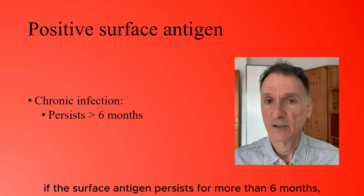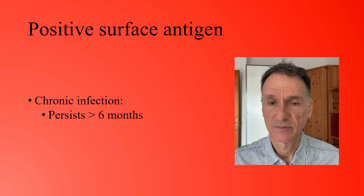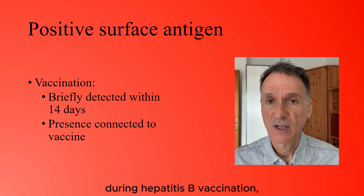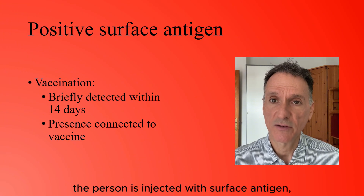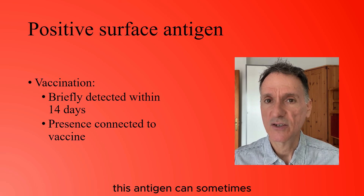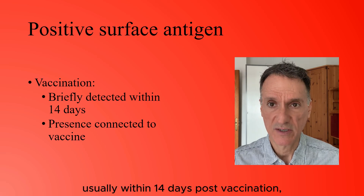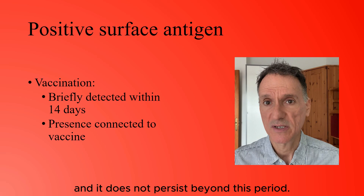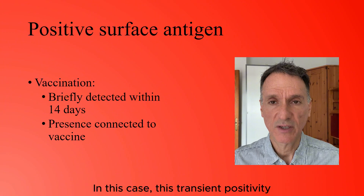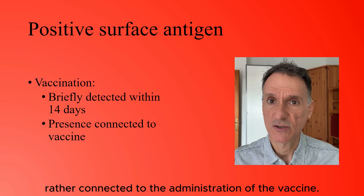However, if the surface antigen persists for more than six months, it indicates chronic hepatitis B. It is worth mentioning that during hepatitis B vaccination, the person is injected with surface antigen, and as a result, after receiving the vaccine, this antigen can sometimes be briefly detected in the blood, usually within 14 days post-vaccination, and it does not persist beyond this period. This transient positivity is not indicative of an actual infection but is connected to the administration of the vaccine.